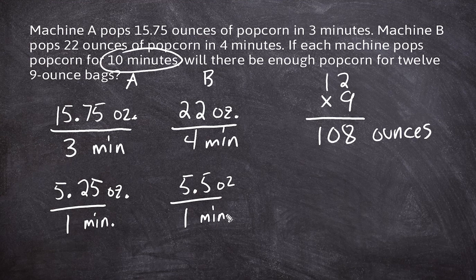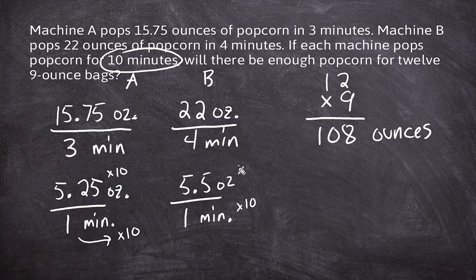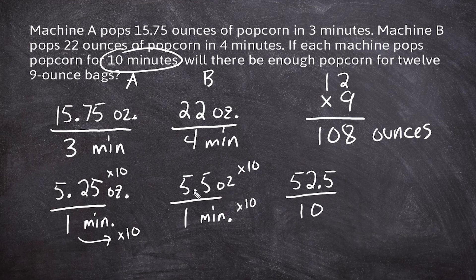Now we can convert both unit rates to a rate of 10 minutes. We make that denominator of one 10 times bigger, which means we make the numerator 10 times bigger as well. Whenever multiplying by 10, we just move the decimal point one space to the right. So 5.25 becomes 52.5 ounces — that's how many ounces machine A pops in 10 minutes. And for machine B, 5.5 ounces scales up to 55 ounces in 10 minutes.